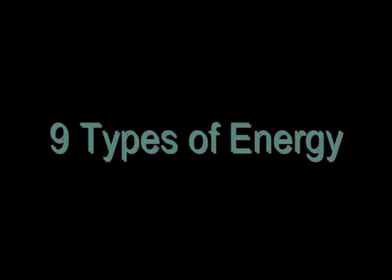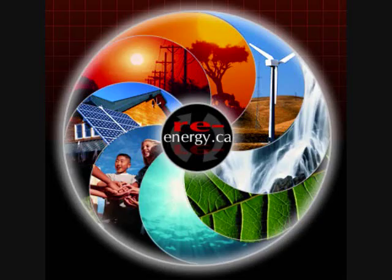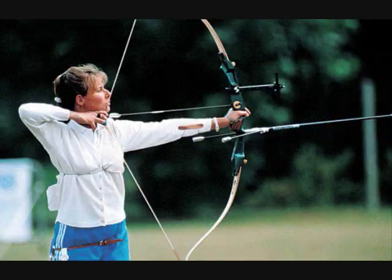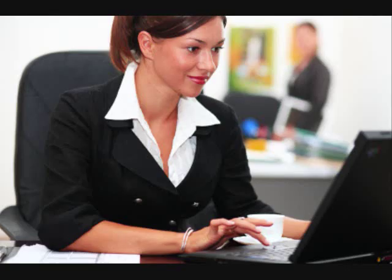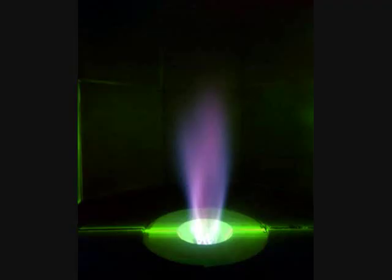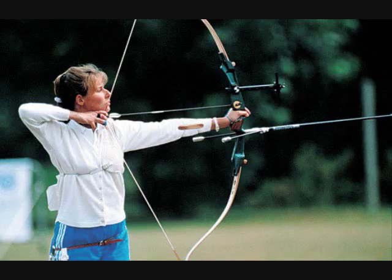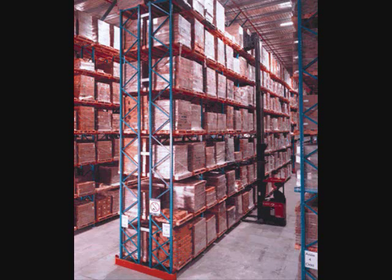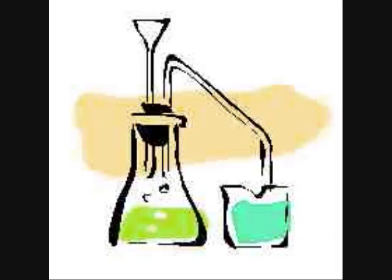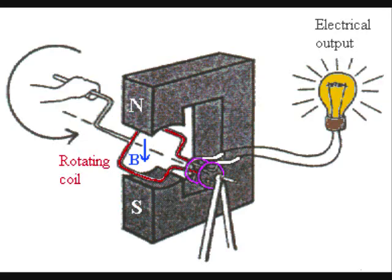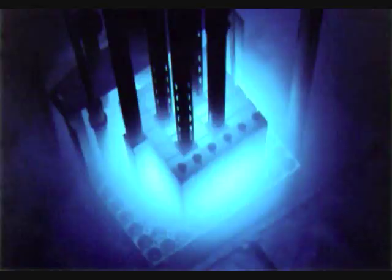There are nine types of energy. Energy forms are either kinetic or potential. Kinetic energy forms are doing work, like electrical, thermal, radiant, motion, and sound. Potential energy comes in forms that are stored, including chemical, gravitational, mechanical, and nuclear.